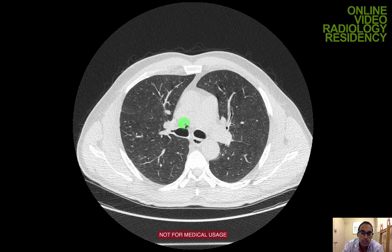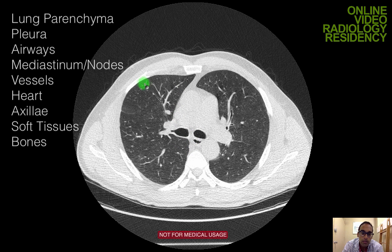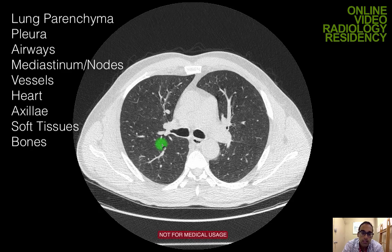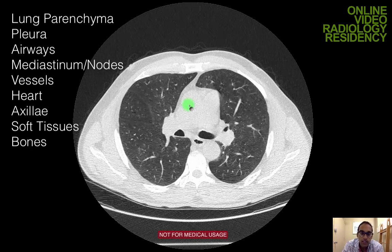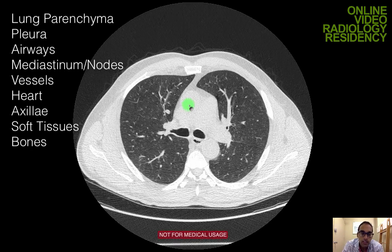With the chest, I basically split it up into lung parenchyma, pleura, and airways. I also split up the mediastinum into mediastinal fat and nodes. I look at the vessels and the heart. Then other things I look at: the axilla for nodal tissue, the soft tissues including the muscles, and lastly the bones.